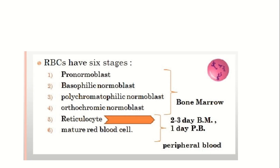RBC formation involves the following stages: pronormoblast, basophilic normoblast, polychromatophilic normoblast, reticulocyte, and mature red cell. These are the main stages - pronormoblast through orthochromic normoblast formation.